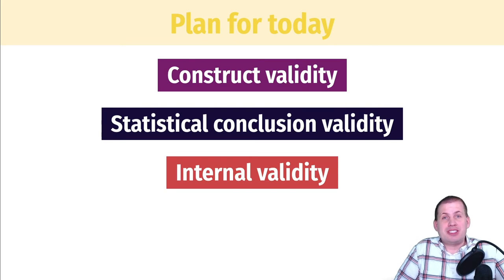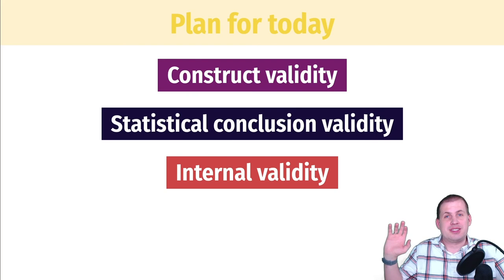Then we'll talk about internal validity, which is the most complicated of the four that we'll talk about today, mostly because there are so many ways a study can be internally invalid and many different ways you can find all sorts of bias in your results. And so we'll talk about a whole bunch of different ways that your findings can go wrong because of internal validity issues.